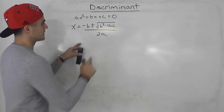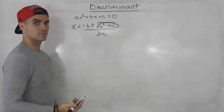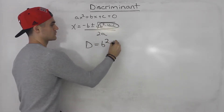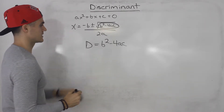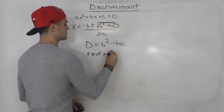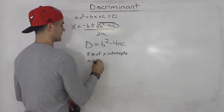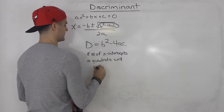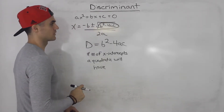The discriminant is basically this part of the quadratic formula. The discriminant, labeled as capital D, is equal to b squared minus 4ac. What this tells us is the number of x-intercepts a quadratic will have — or the number of zeros, or the number of solutions that a quadratic equation will have.